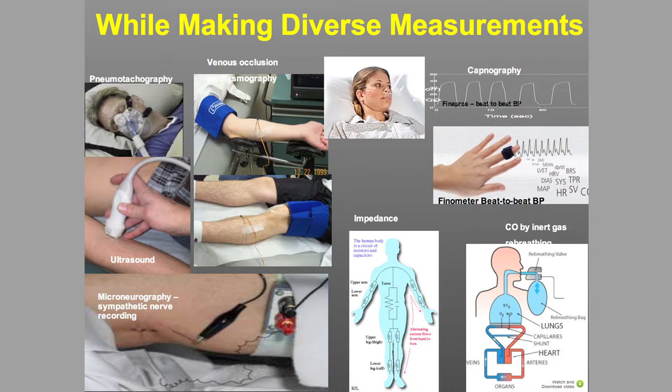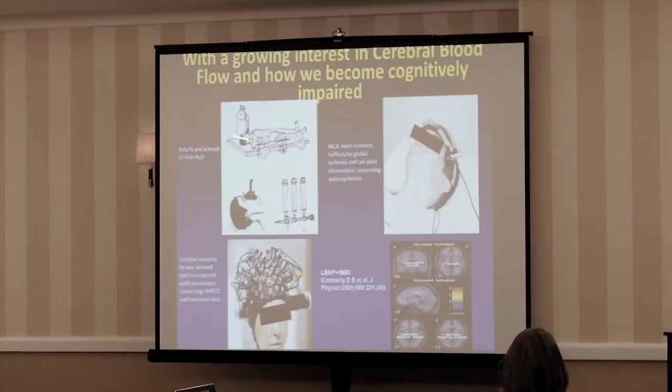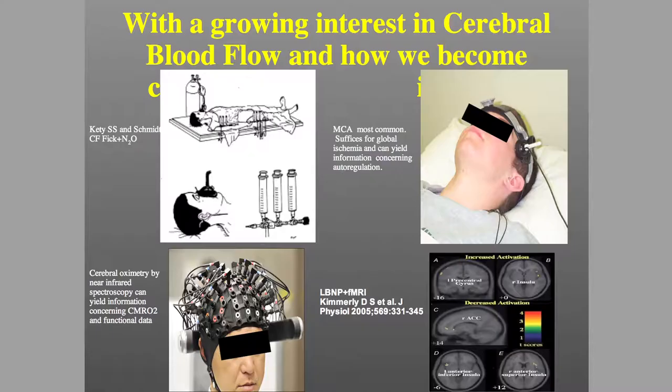One of the most useful measurements, because of its importance in blood flow regulation in the brain, is capnography — a measurement of carbon dioxide. Many patients have alterations in respiration that can be very important. We also started focusing on measurements of brain blood flow: the original Kety-Schmidt method using inert gas, transcranial Doppler, near-infrared spectroscopy, and some have done functional MRI imaging along with non-metallic lower body negative pressure devices.